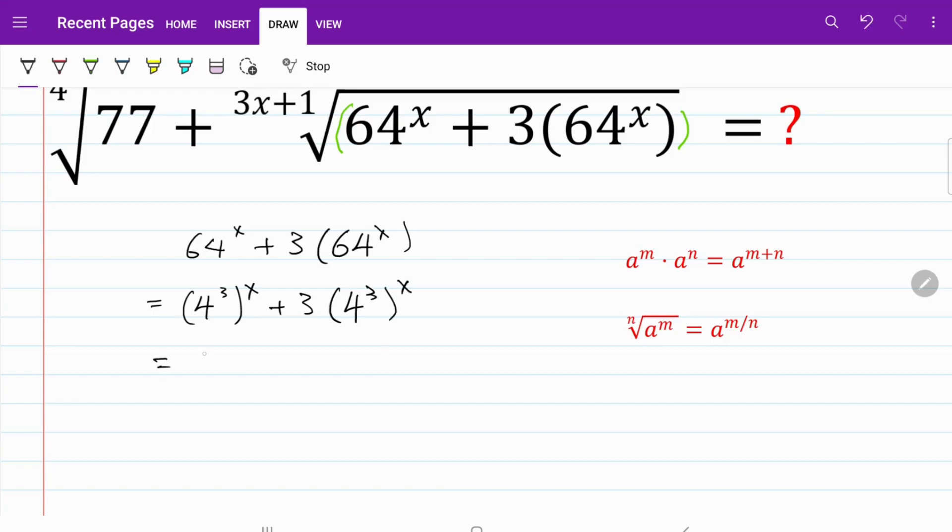This is equivalent to 4 to the power of 3x plus 3 multiplied by 4 to the power of 3x.